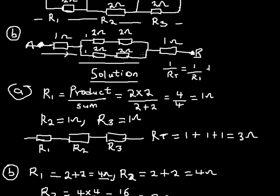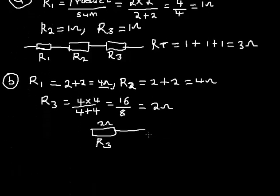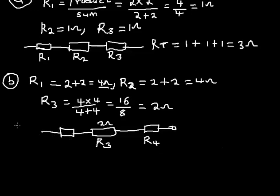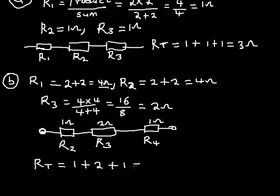This 2-ohm equivalent (R3) is now connected in series with a 1-ohm resistor on the left and a 1-ohm resistor on the right. So the total resistance of the entire network is 1 + 2 + 1 = 4 ohms.